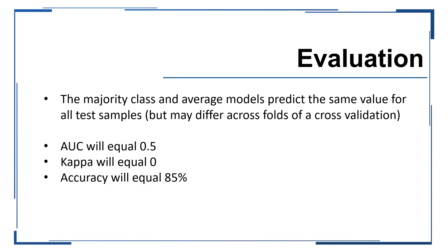These models both predict the same value for all of the test samples, and as such, by definition, the AUC and kappa values will indicate that these models perform no better than random chance. However, accuracy and other metrics might show differently. The accuracy in this case, in our example, would be 85% — even though we predicted the same value for all of our samples, it was right for 85% of those samples.